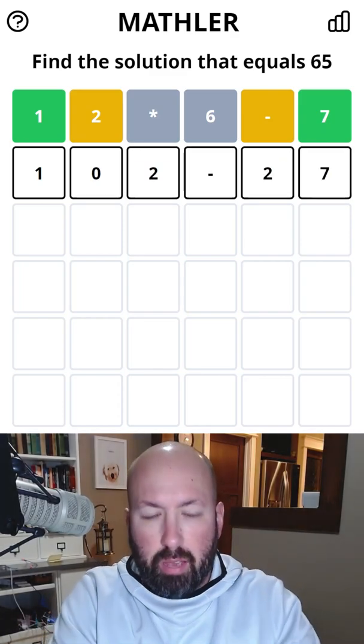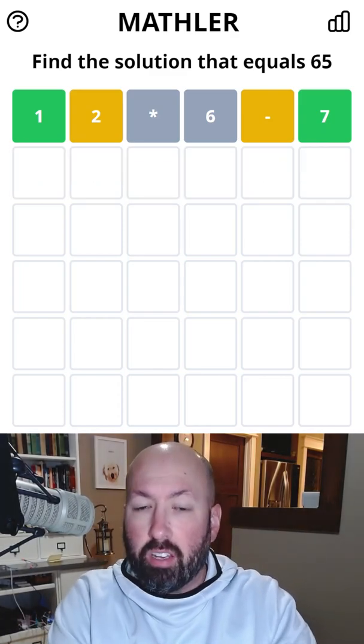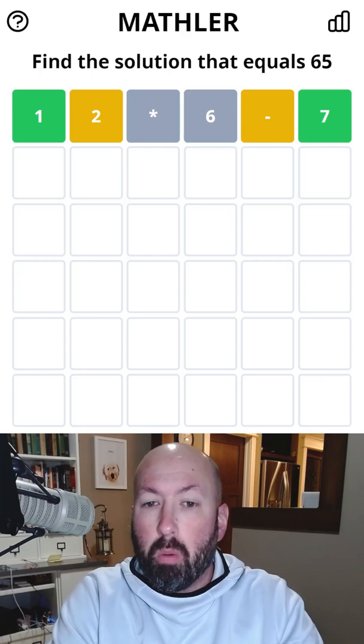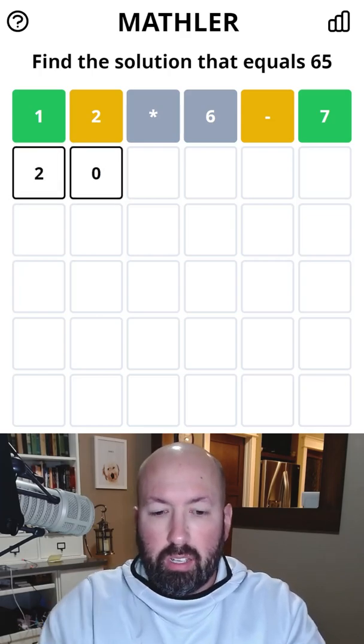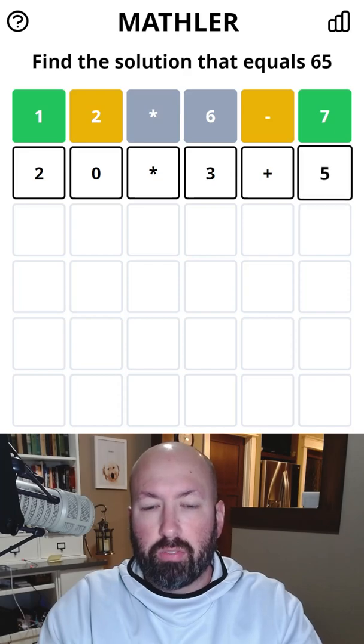What I'm going to do is make a guess that I know is wrong but will get me more new digits. So I'm going to do 20 times 3 plus 5.